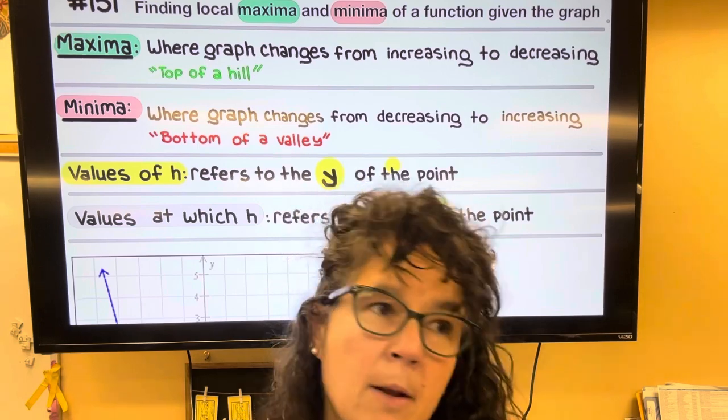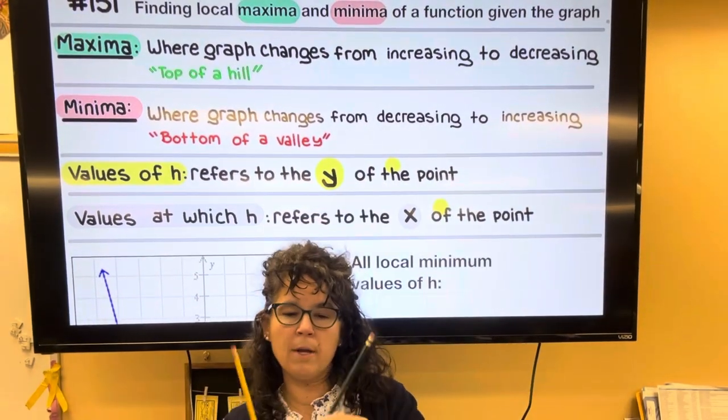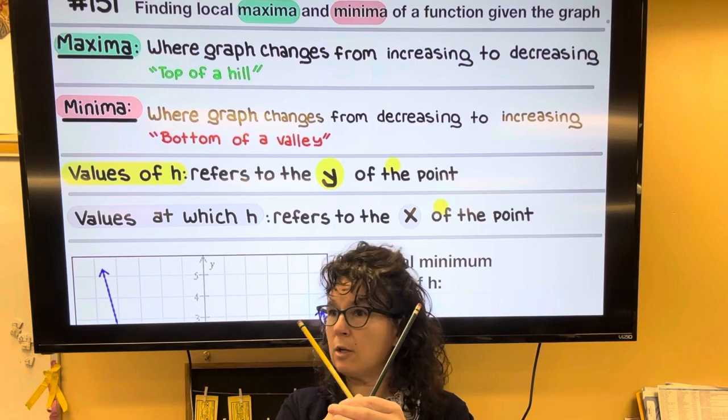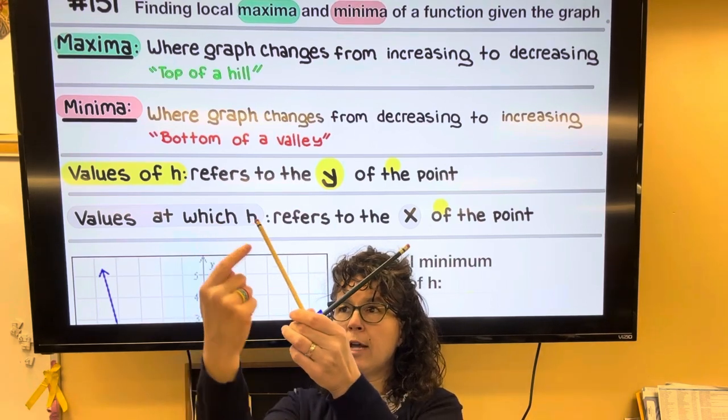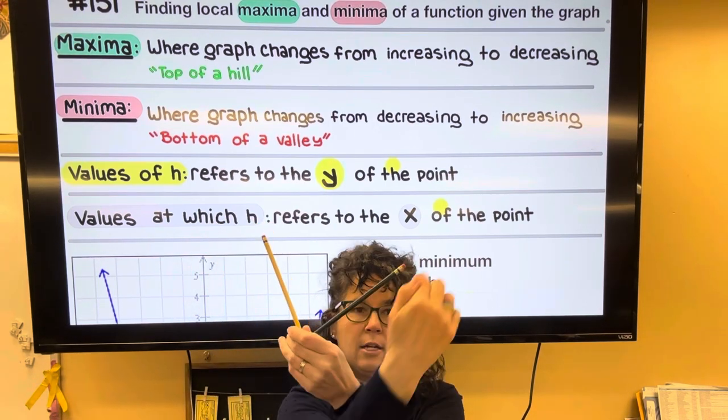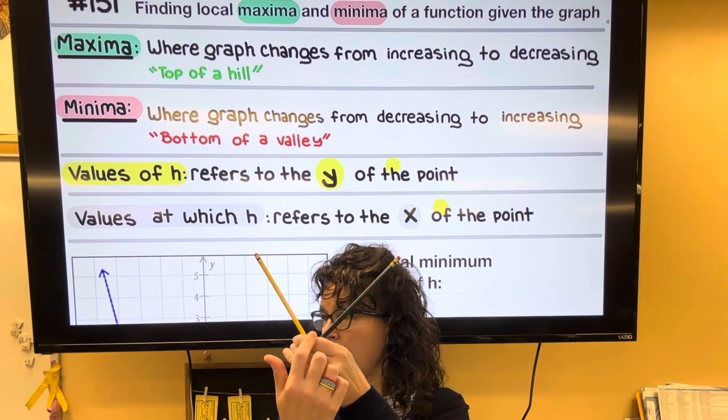And then similarly for a minima, a local minima is going to be technically where the graph changes from going downhill, decreasing to uphill increasing. So it's like the bottom of the valley.